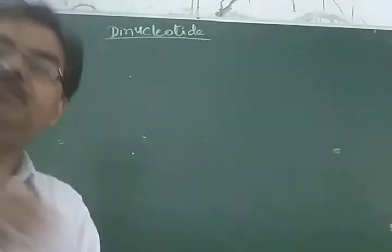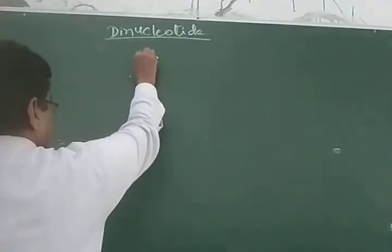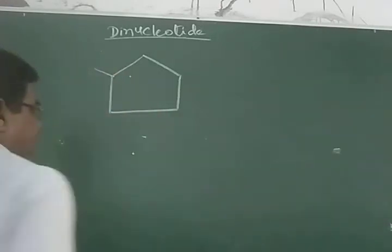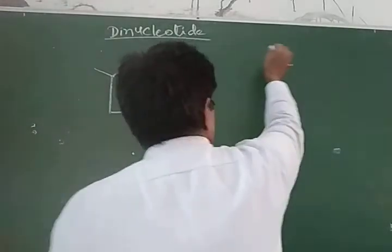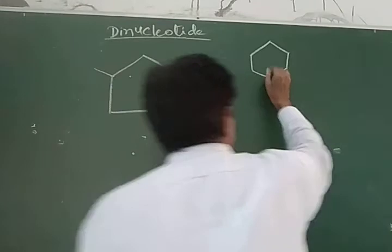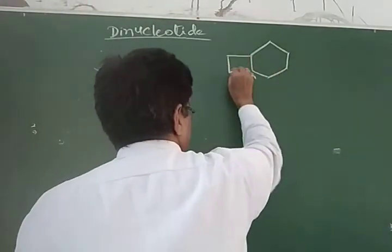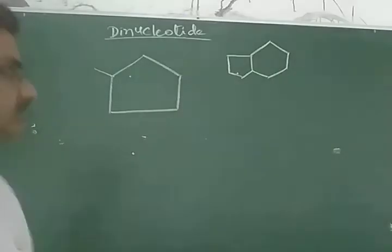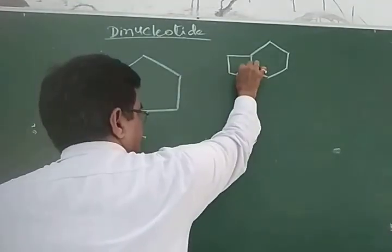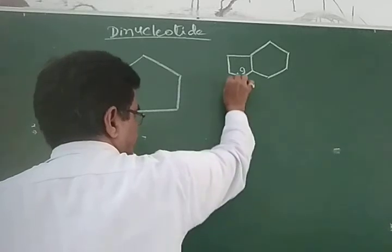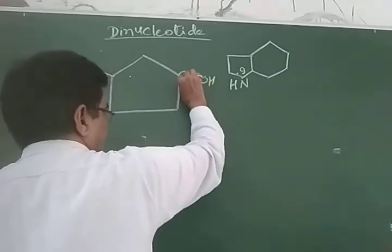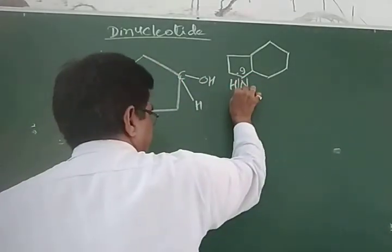Now let's start the diagram. Suppose this is the pentose sugar. This is the nitrogen base — a double ring base structure, which means a purine base, suppose either adenine or guanine. At the ninth position, there is the NH group. This is the NH group, and there is the carbon with OH. This is the H group, and now it forms a bond.